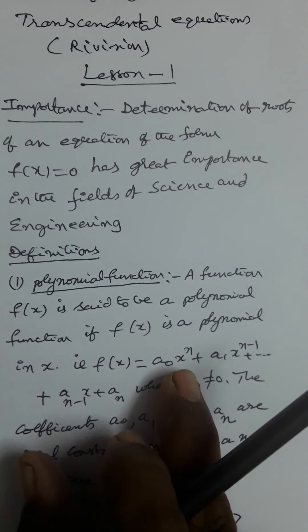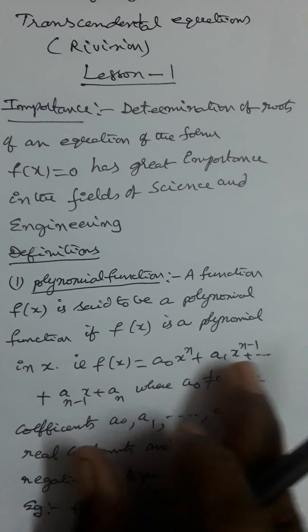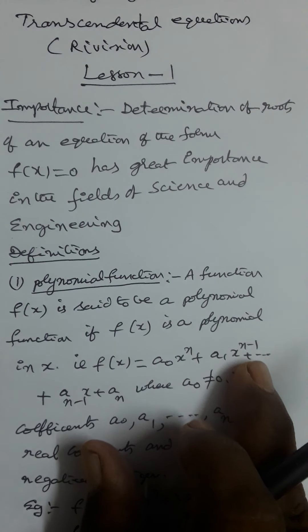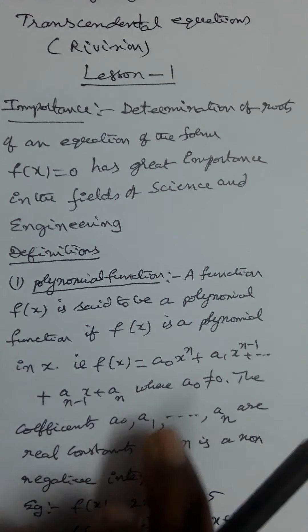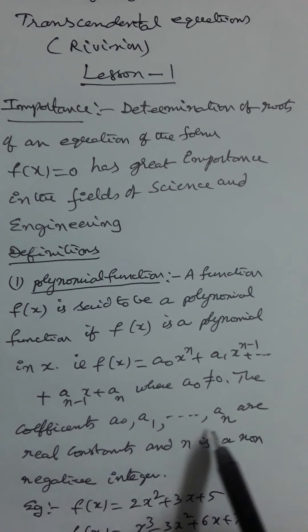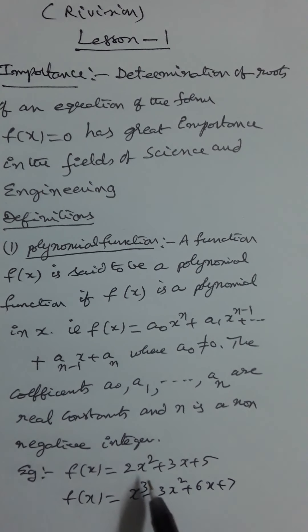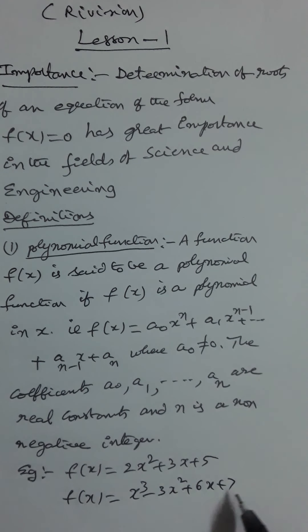The degree of the polynomial is n when a₀ ≠ 0. When a₀ = 0, we get an (n−1)th degree polynomial — that is why a₀ must not equal 0. The coefficients a₀, a₁, ..., aₙ are real constants, and n is a non-negative integer. Examples: f(x) = 2x² + 3x + 5 and f(x) = x³ − 3x² + 6x + 7 are examples of polynomial functions.